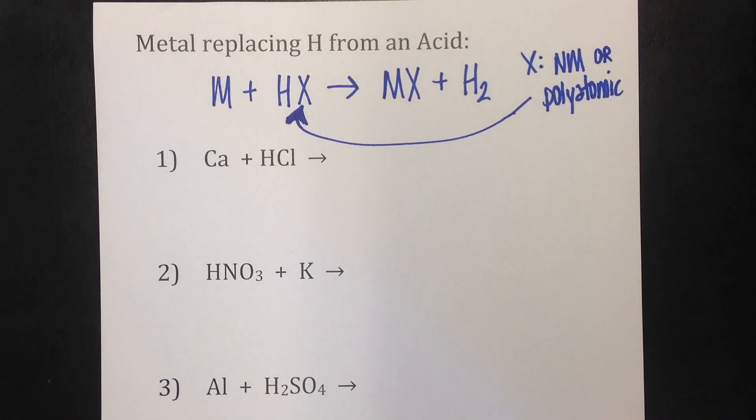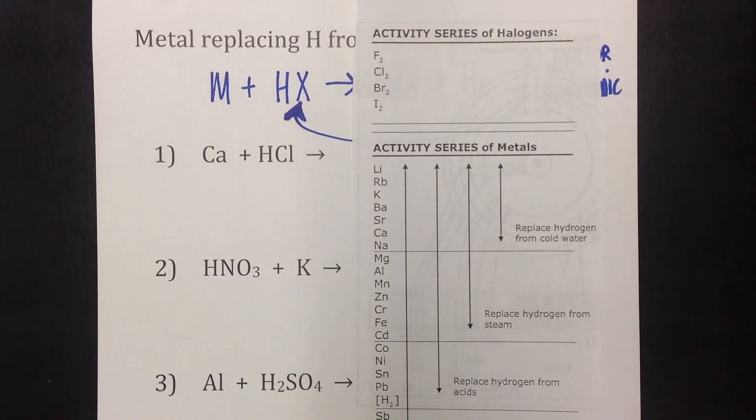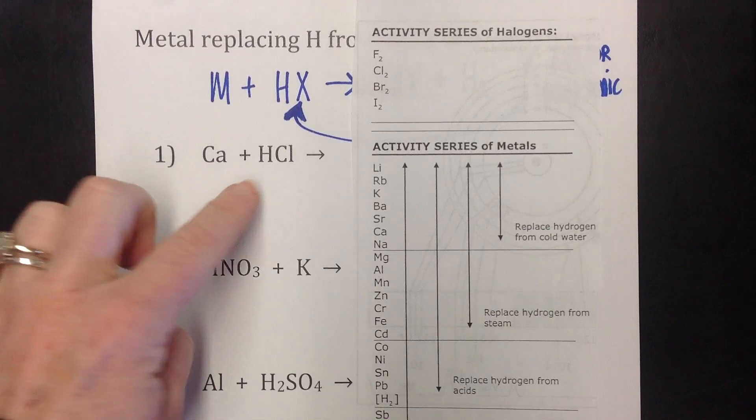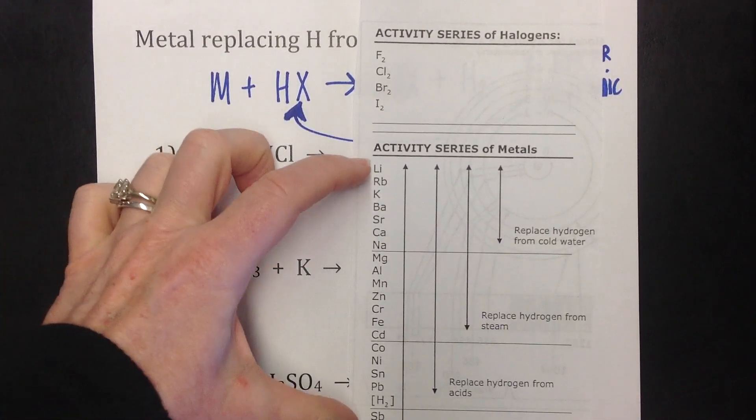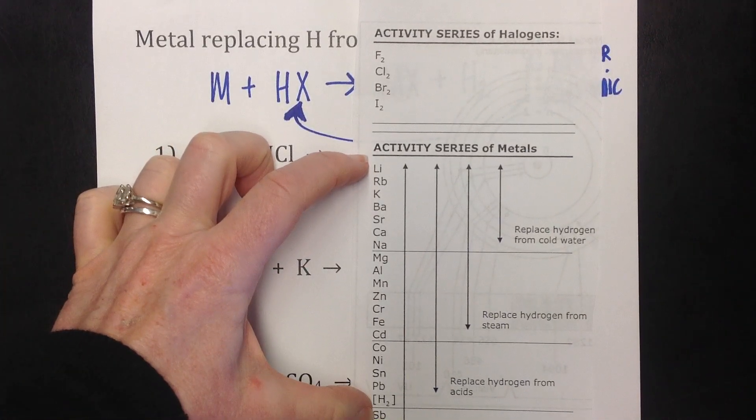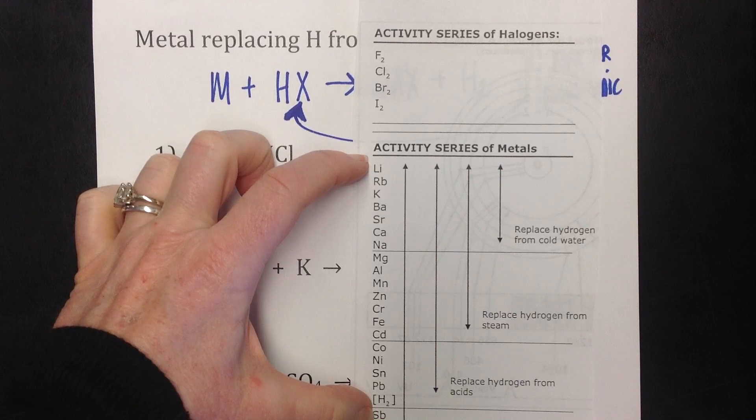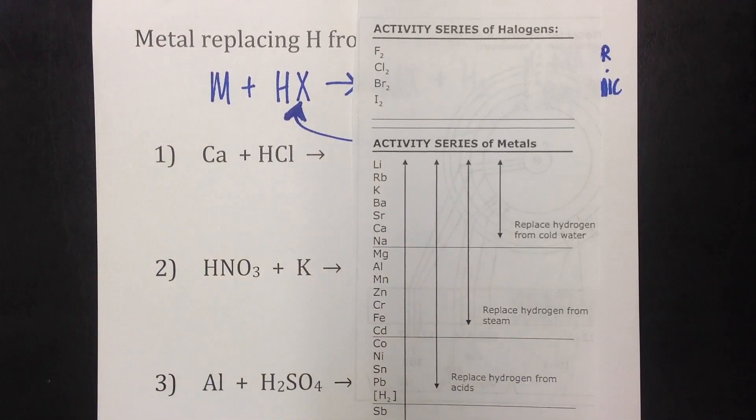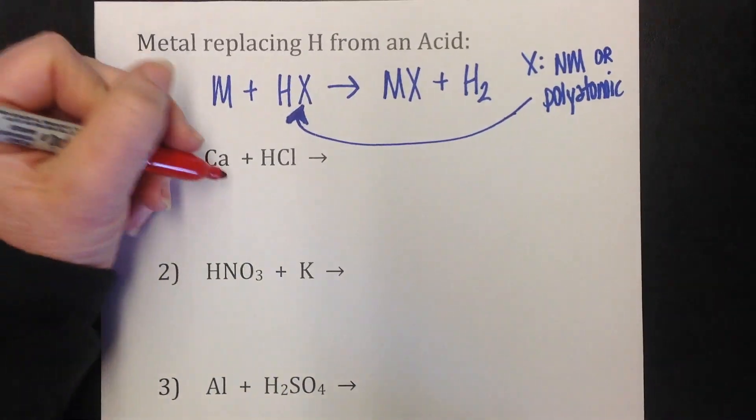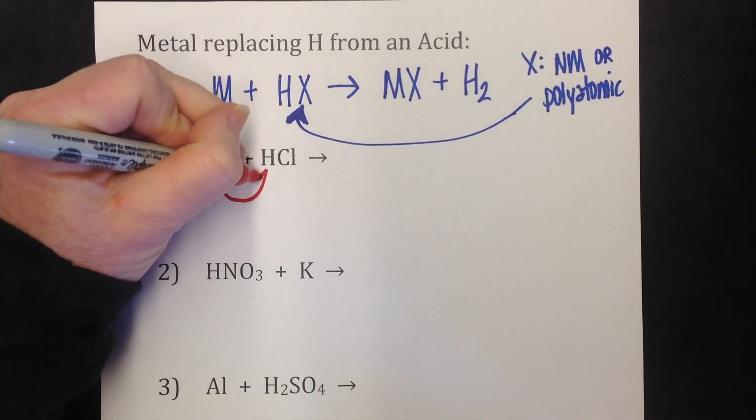So I'm going to ask myself, can calcium replace hydrogen out of hydrochloric acid. So you want to look at these guys. These are the metals that can replace hydrogen from an acid. Calcium does fall in that group.